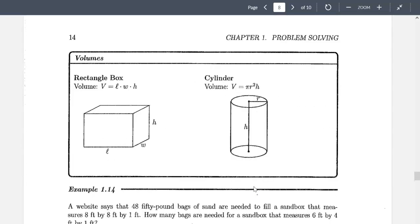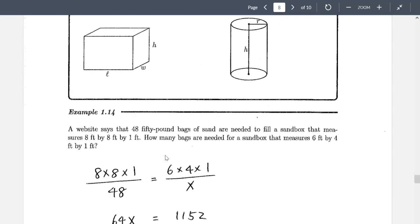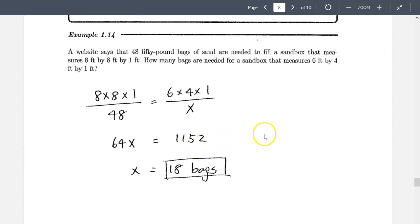Okay now volume is the same thing here. Some basic formula for the volume for rectangular box versus a cylinder. So if you look at this is a similar situation. A website says 48, 50 pound bags of sand are needed to fill the sandbox. It's 8 feet by 8 feet by 1. So it's 8 by 8 by 1 of sandbox. It's a rectangular box. How many bags are needed for a sandbox that's 6 by 4 by 1?